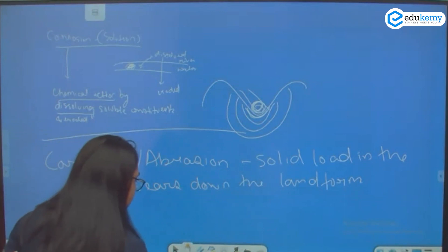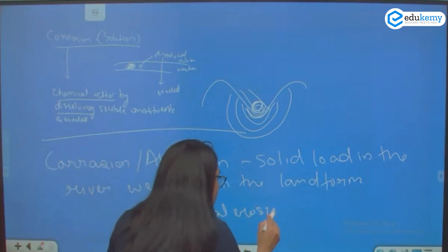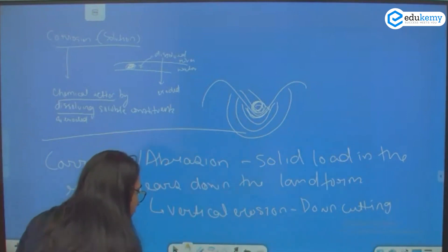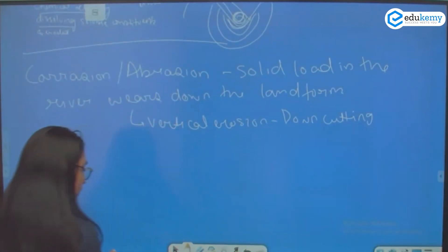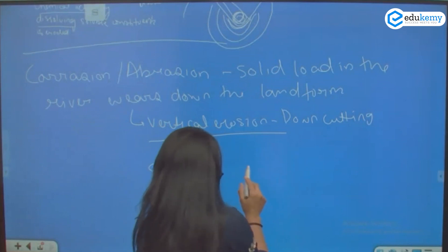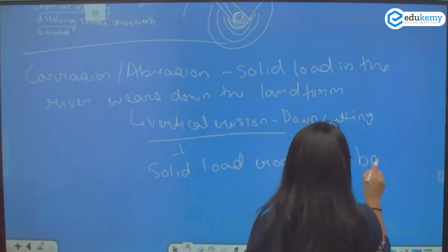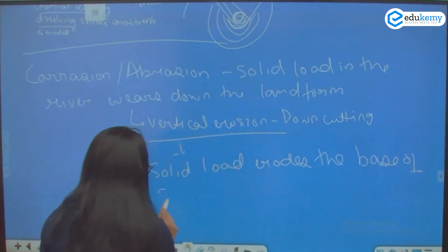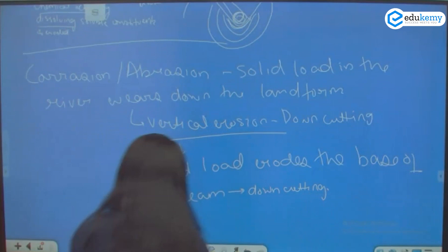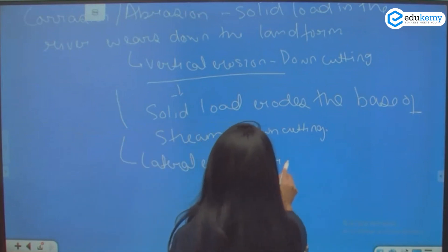Corrasion is of three types. The first is down-cutting or vertical erosion. In vertical erosion, the solid load erodes the base of the stream, leading to down-cutting. In lateral erosion, the erosion occurs on the walls of the stream — on the walls of the river.